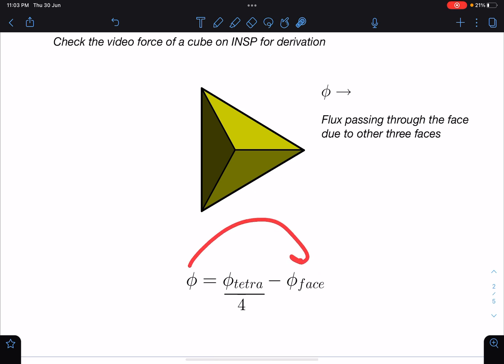Now I am taking it other side, so this total flux passing through this will be phi tetra by 4. If there are 5 faces, 5 total divided by 5. If n faces are there then I will be writing it as phi total divided by n. So I hope this part is clear to you.